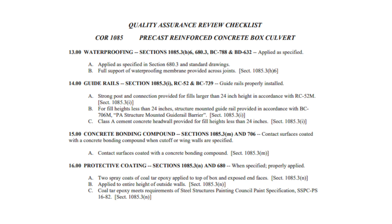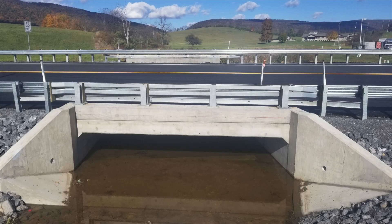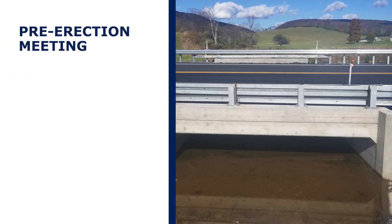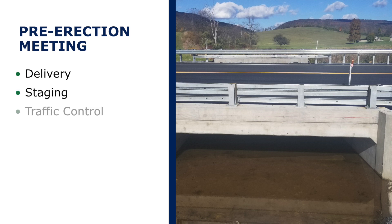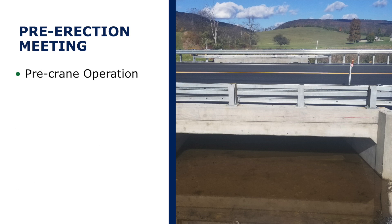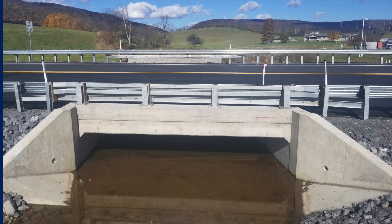For the purposes of this video, we will begin after the E&S controls and temporary water diversion system have been installed. At least two weeks prior to the actual installation of the box culvert, a pre-erection meeting is required to discuss all aspects of the placement, such as delivery, staging, traffic control, sequence of erection — which would be included in the required erection plan — post-tensioning, grouting, waterproofing, and backfilling. This would also be a good time to conduct the pre-crane operation meeting, as required in Publication 408 Section 108.05.